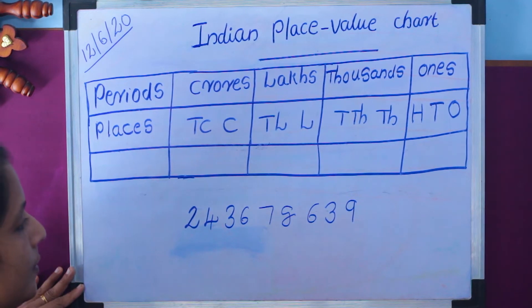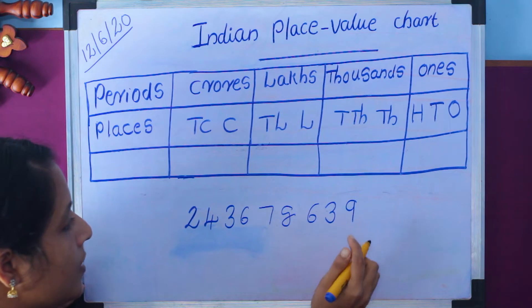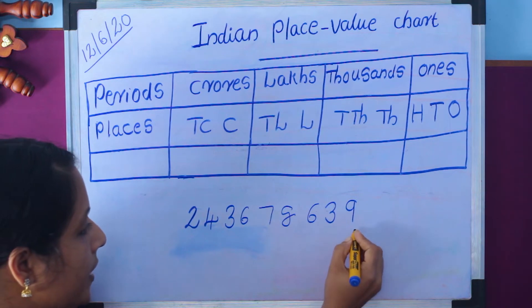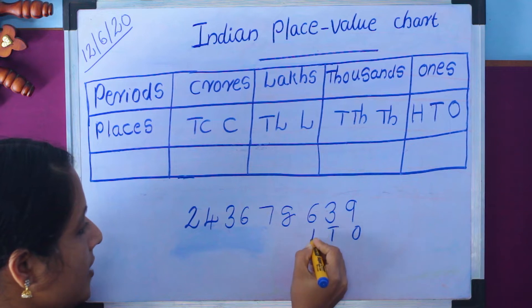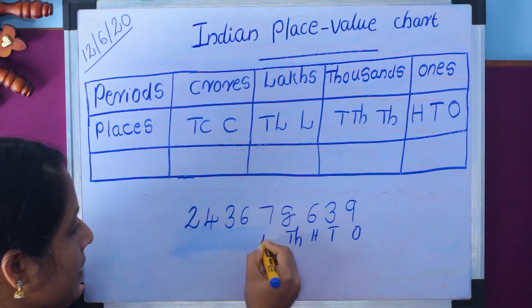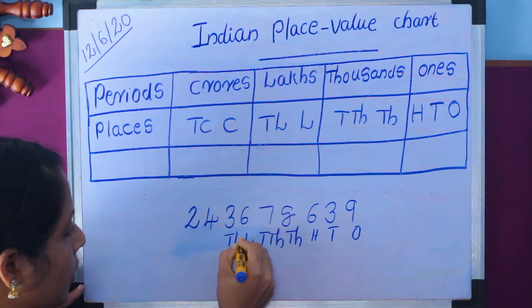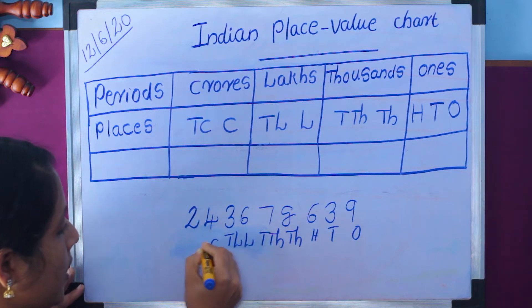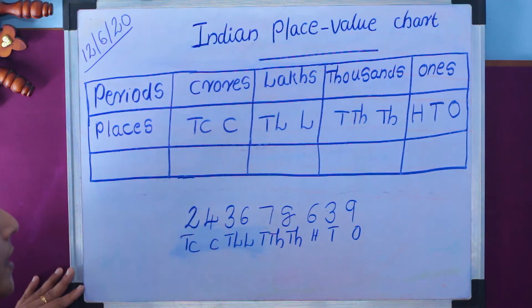In this number, the last digit is 9. So let us chart the place values: ones, tens, hundreds, thousands, ten thousands, lakhs, ten lakhs, crores, ten crores. We write this number inside our table.